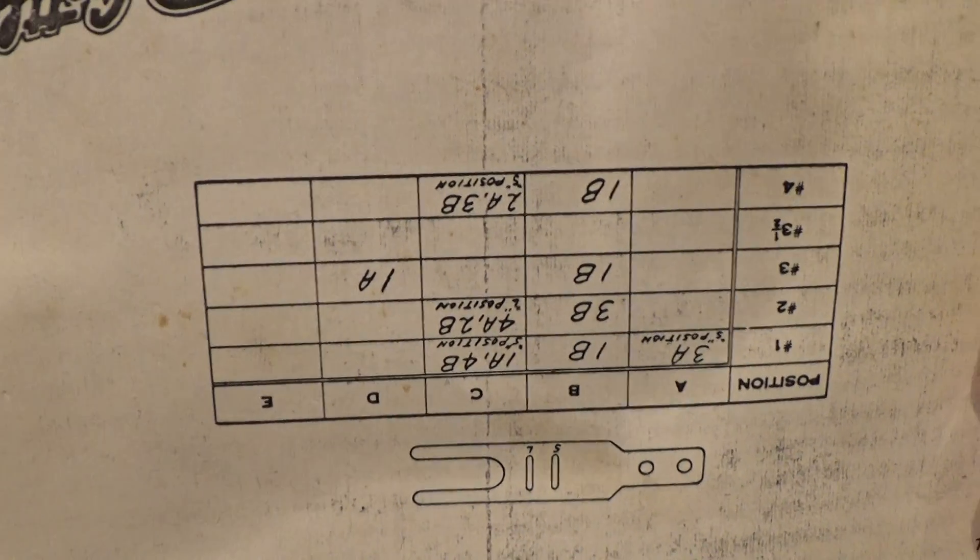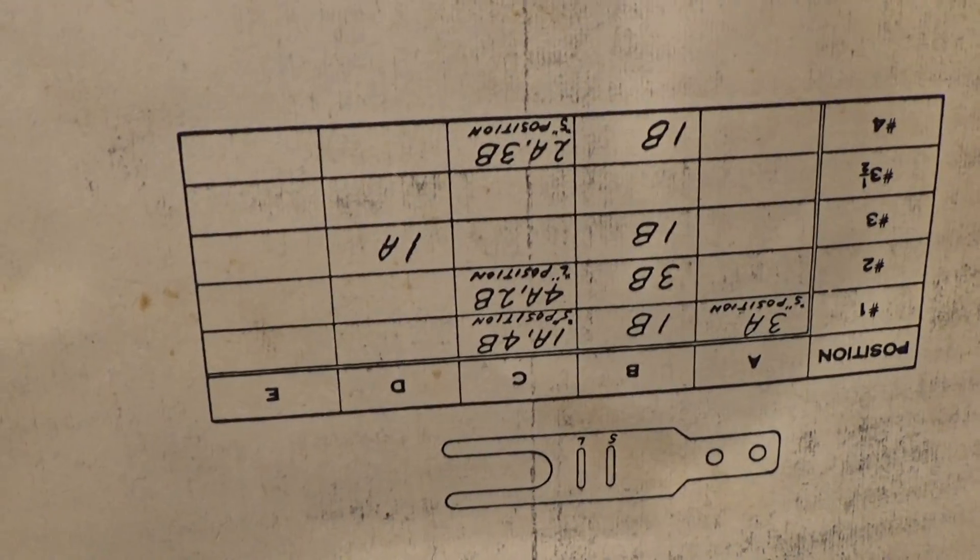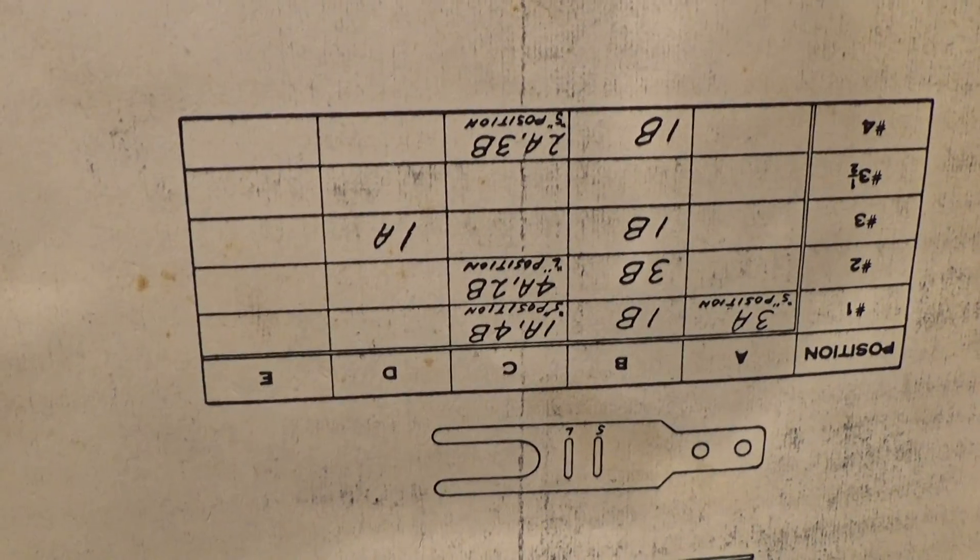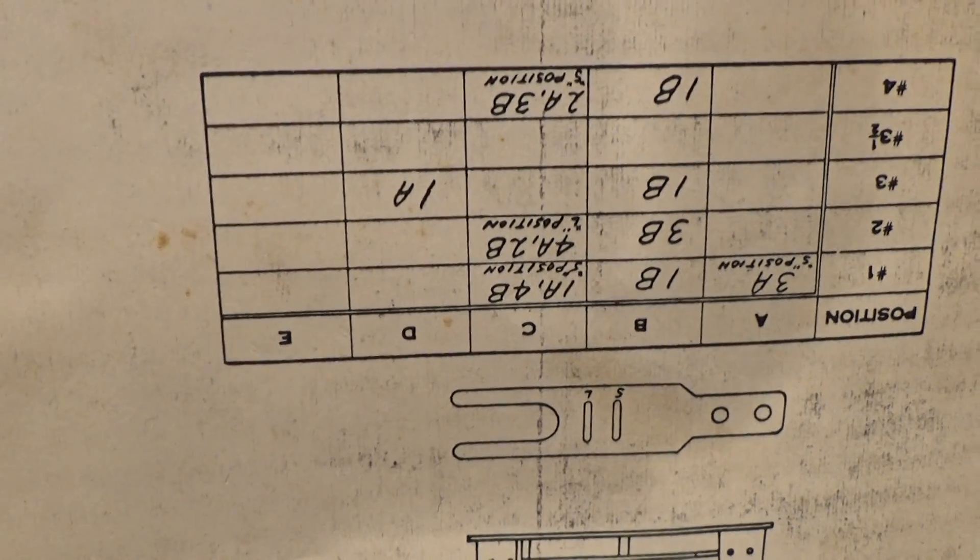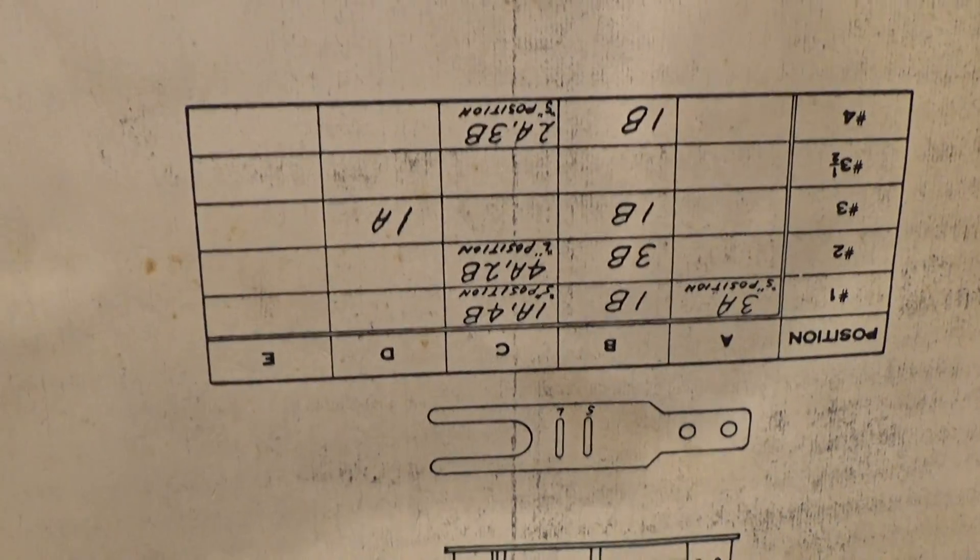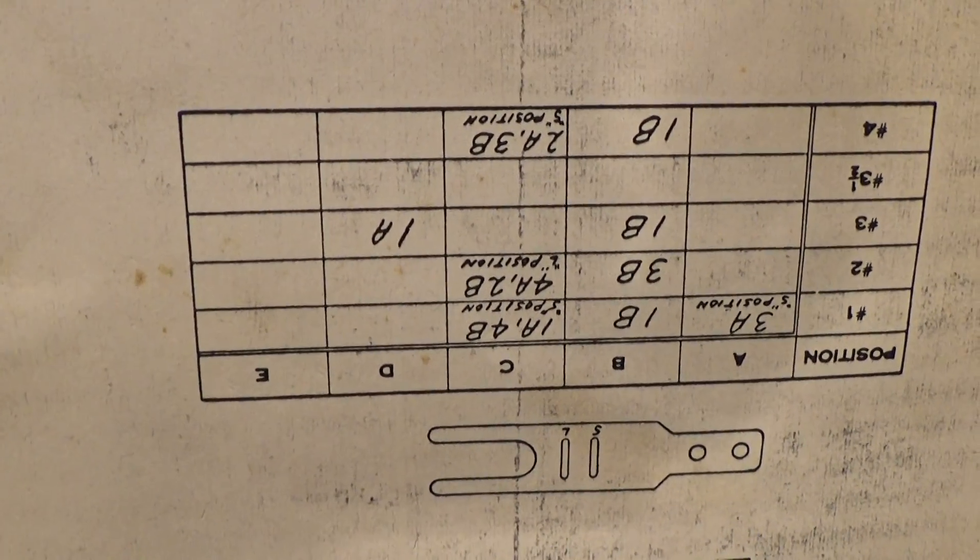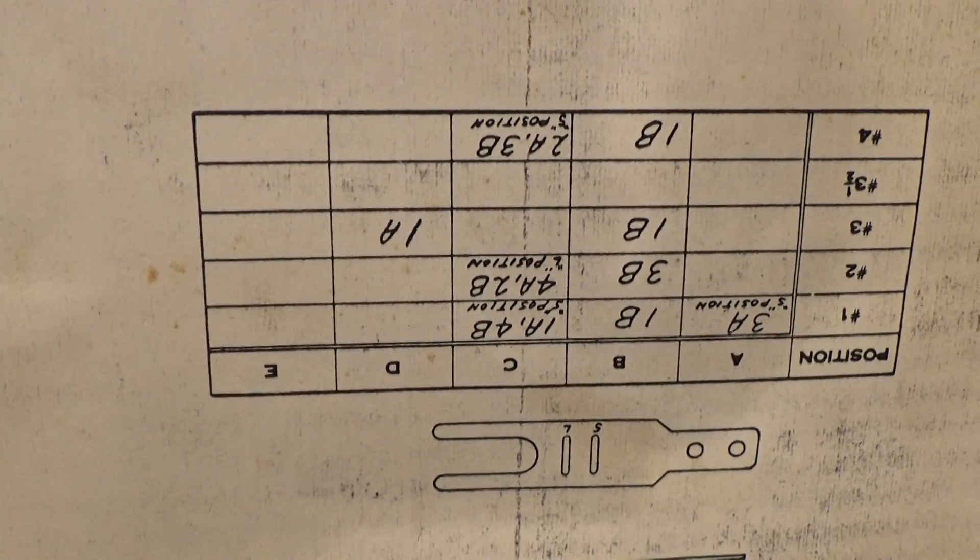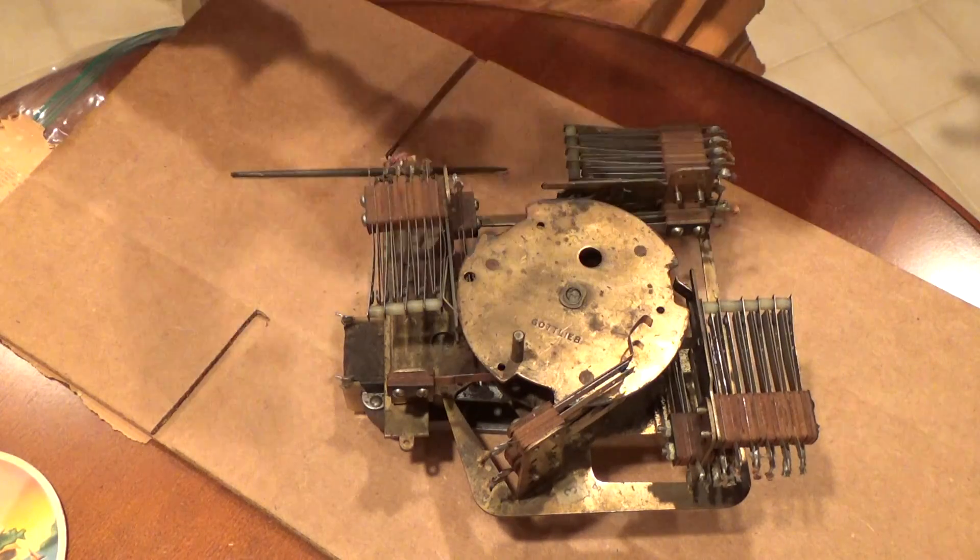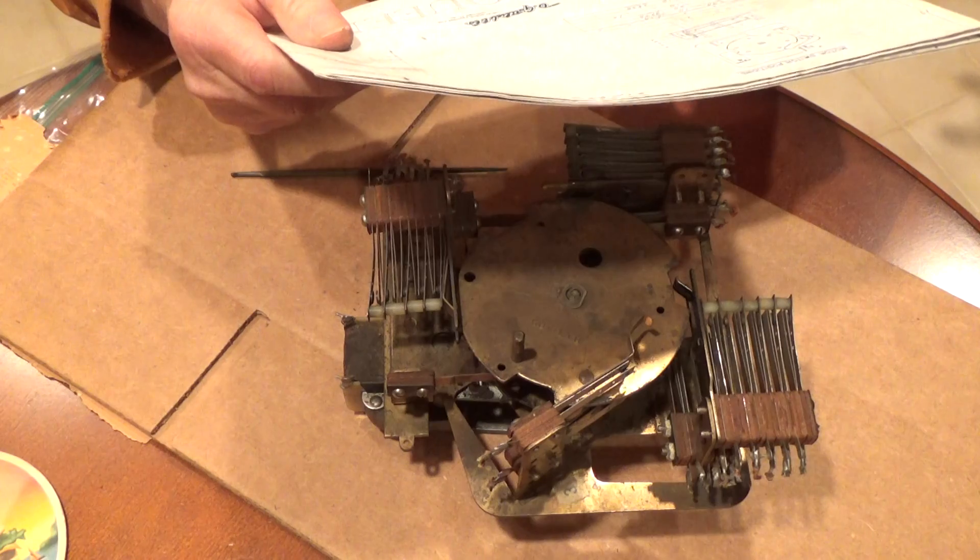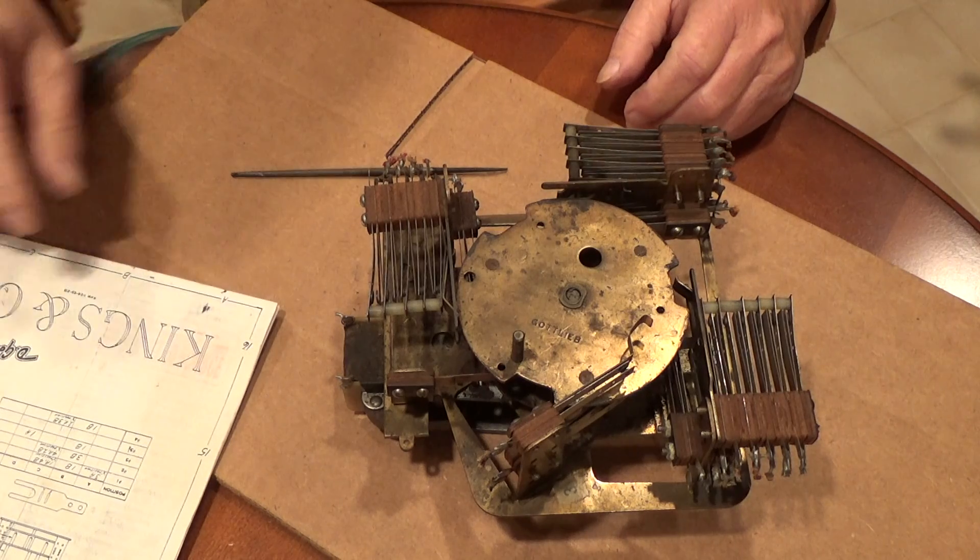An A designation is a normally open switch. A B designation is a normally closed switch. And then if there's a C designation on there, I don't know, that would be a make or break. Now there are some C designations in later machines I know that, but on this machine there's no C, so there's no make or break switches in any of the stacks.